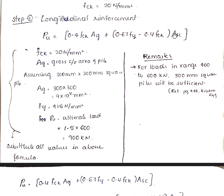For all the parameters I have written what we have. FCK is 20 N per mm squared, AG is the gross cross sectional area of the pile. Here in the question they have given only this is the square pile, but we are assuming it as 300 mm by 300 mm square pile. Because from the guidelines in the remarks I have written, for loads in the range 400 to 600 kN, 300 mm square piles are sufficient. Gross cross sectional area is 300 into 300.